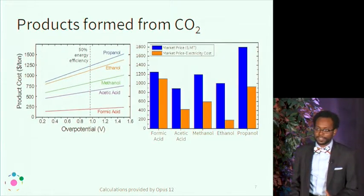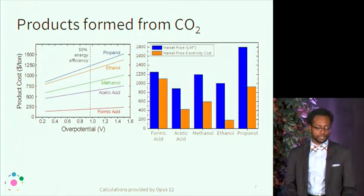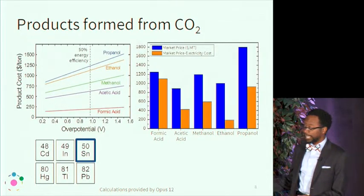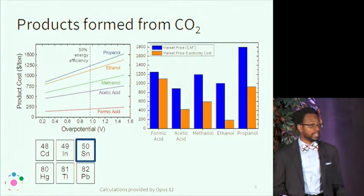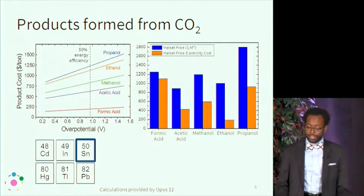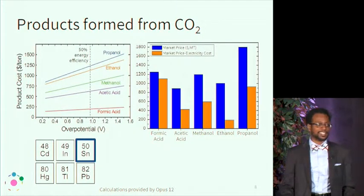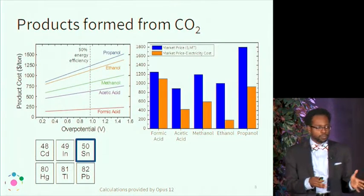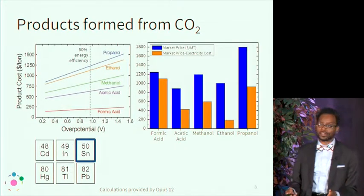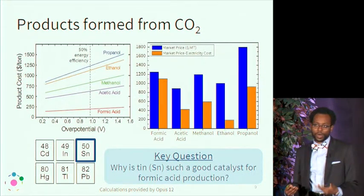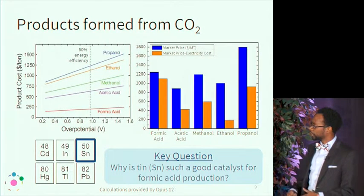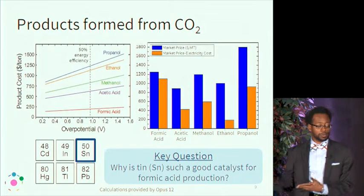Focusing on formic acid as the target product, a number of catalysts have been identified as promising. Tin turns out to be one of the more active catalysts for CO2 reduction to formic acid. There has been a lot of good work done on tin catalysts at Stanford and internationally, but one key fundamental question remains unanswered: why is tin so good at making formic acid? That is the key question this research aims to address.